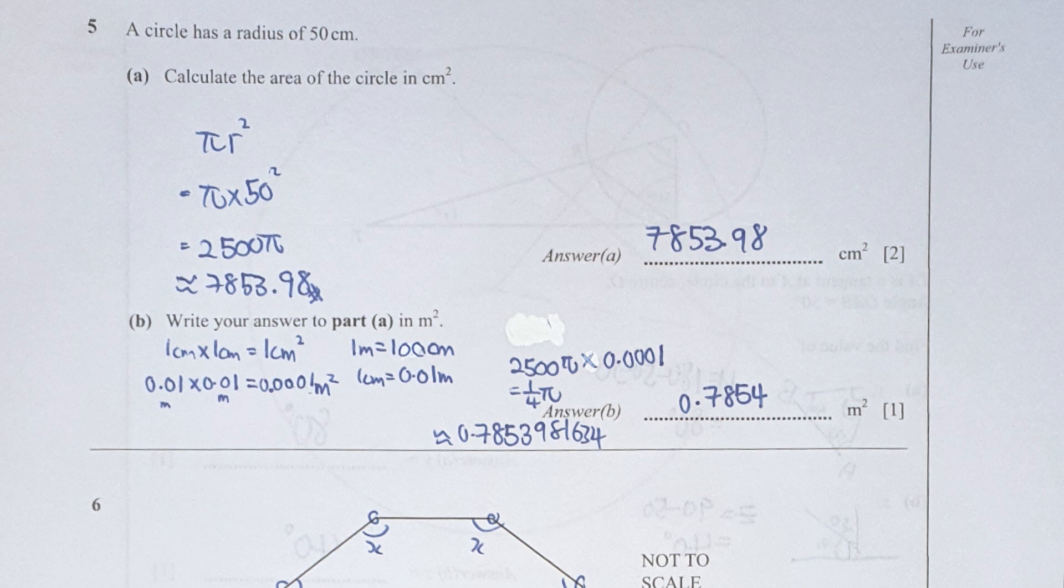1 cm is actually 0.01 meters, so 0.0001 meter square. Okay, so 2500 pi times 0.0001 is actually 1 over 4 pi, which translates into 0.7854 meter square.